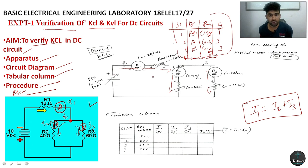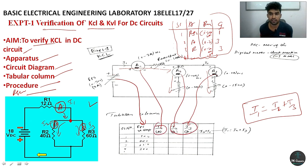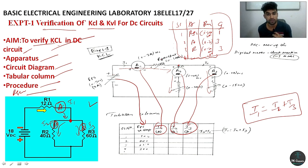We will make a tabulation column based on the circuit diagram. There are 3 meters present. Each meter measures one of the three currents. The RPS provides the input voltage. The addition of I2 plus I3 must equal I1. When the A2 reading plus A3 reading equals A1 reading, the KCL experiment is verified. The reason we conduct this experiment is to measure how much current flows through each particular electrical component.